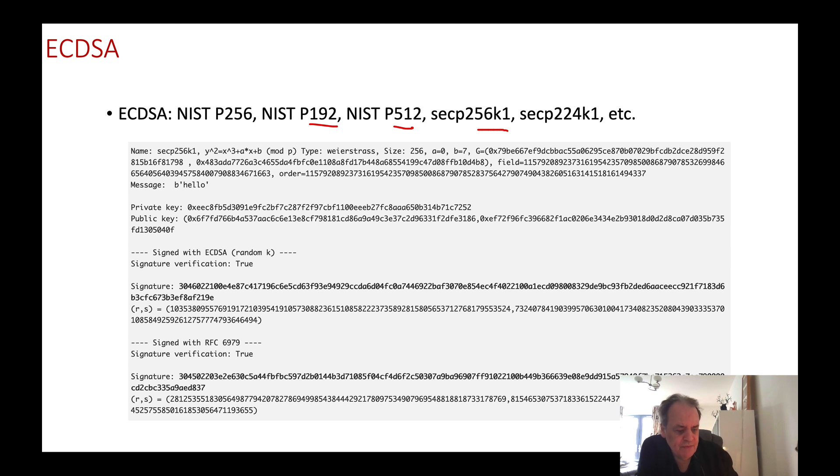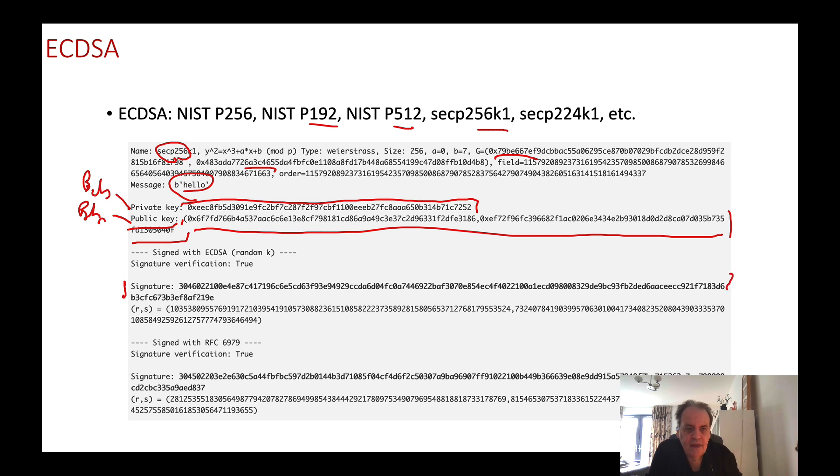Here's an example of some signatures. Here's the private key - a scalar value using 256 bits. The public key is an XY point. It's the base point multiplied by the private key to give us the public key. This is Bob's private key and Bob's public key. We take the message, in this case just 'hello', and use the method we showed to generate an R and S value. We can also define it in terms of a signature. You can identify this because it starts with 30.